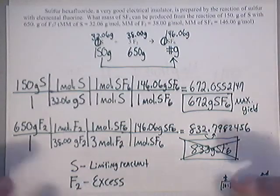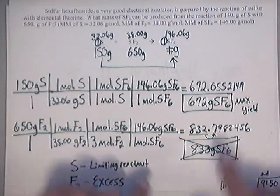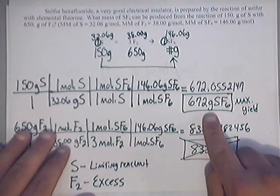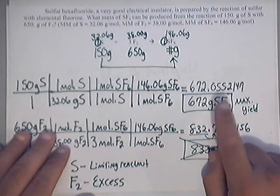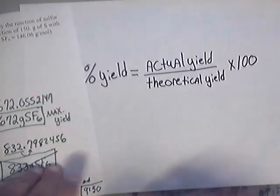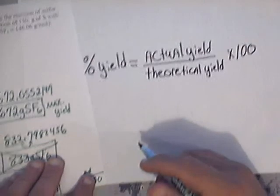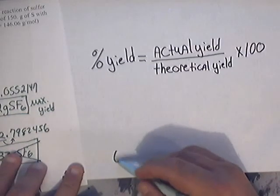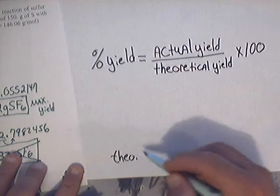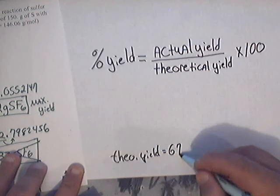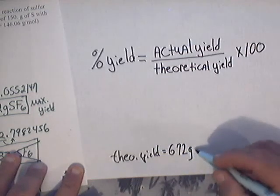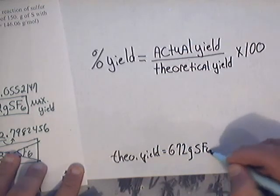When you get ready to do your calculation for percent yield, this number — which was your maximum yield — is your theoretical yield. So in this case, your theoretical yield is 672 grams of sulfur hexafluoride.